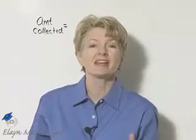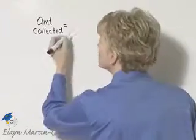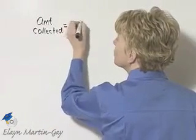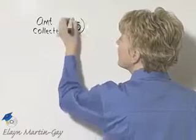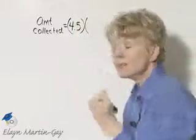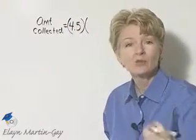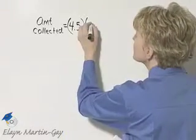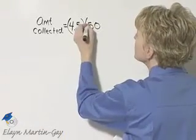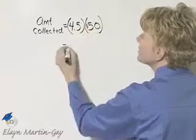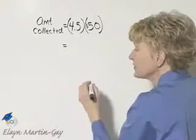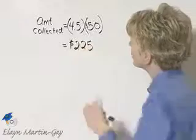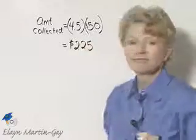To find the money collected in week two, that would be four and a half, or 4.5, times the amount each bill represents. Each bill represents $50, so multiply 4.5 times 50 and you'll have $225.